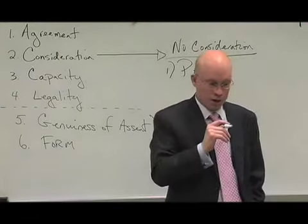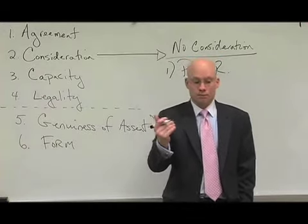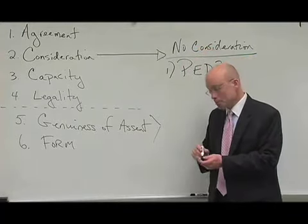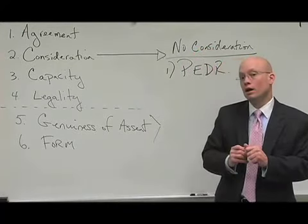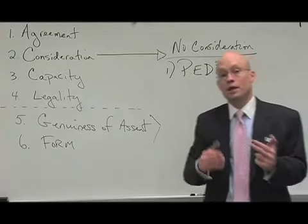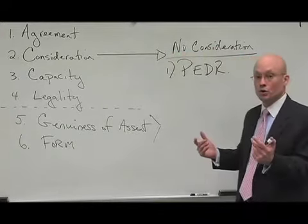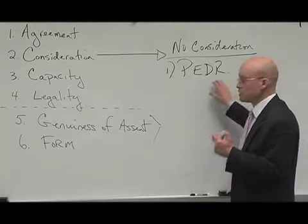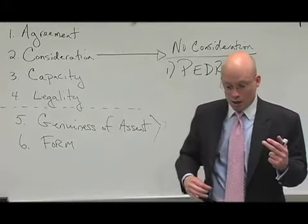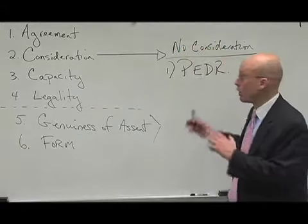What we mean by that is this: suppose I lose my wallet, and I put out a reward for that wallet of, let's say, $100. And a police officer brings me that wallet — is he or she entitled to that reward? The answer is no, because they already have a pre-existing duty as a police officer to return that wallet to its respective owner. So if you have a pre-existing duty and someone offers you money, it lacks consideration. If that person gives you the wallet and demands the reward, you do not have to pay them. There is no contract there.